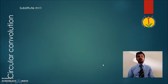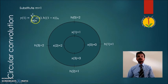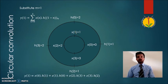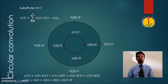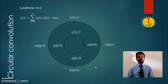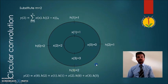In the next step, substituting m equal to 1, the h sequence is delayed by one sample, so we shift h of n in the anticlockwise direction by one sample and follow the same multiplication and addition procedure. After multiplying and adding the corresponding samples, we get the second convolved value. Next, for m equal to 2, h of n is delayed by two samples; plotting along the outer circle and performing multiplication and addition gives a value equal to 11.